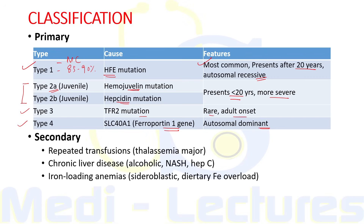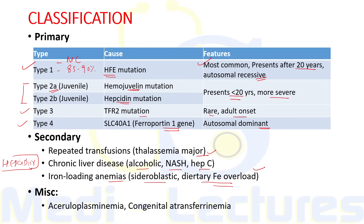Secondary hemochromatosis can occur due to repeated transfusions in conditions like thalassemia major, chronic liver disease due to alcohol, NASH, or hepatitis C. In chronic liver disease, hepcidin — normally produced in the liver — is not produced in cirrhosis, leading to iron excess. Iron-loading anemias such as sideroblastic anemia and dietary iron overload can also cause secondary hemochromatosis. Miscellaneous conditions include aceruloplasminemia and congenital atransferrinemia.